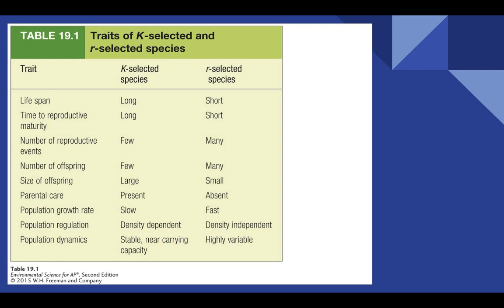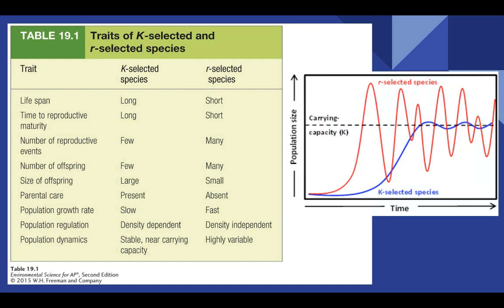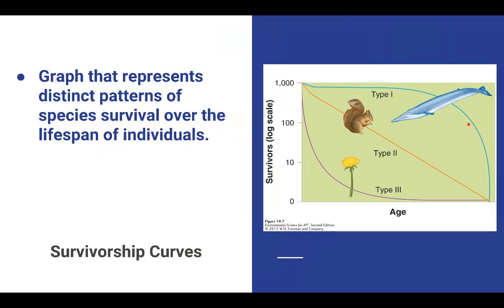Here's a great example — make sure you understand this table showing K-selected compared to R-selected. This graph also does a great job showing that R-selected species overshoot and die off repeatedly, whereas K-selected species will usually hang around that carrying capacity line.